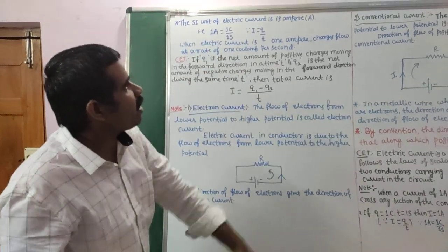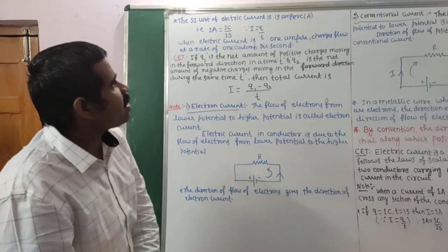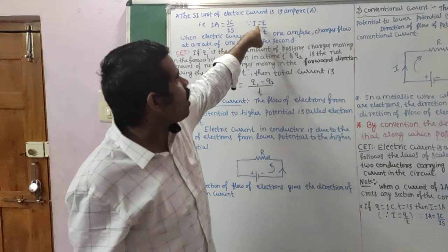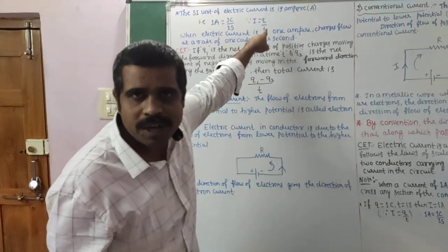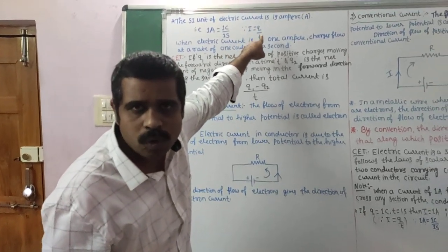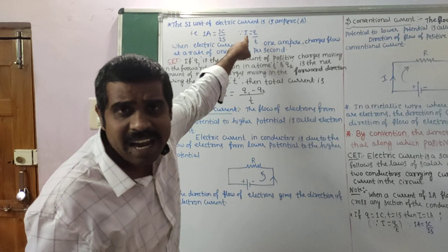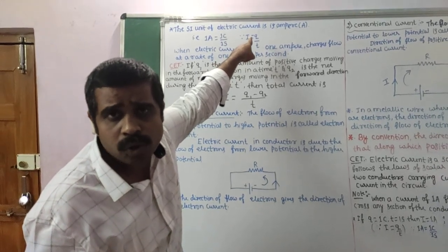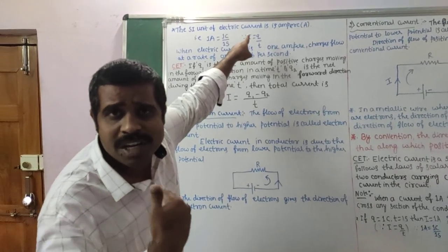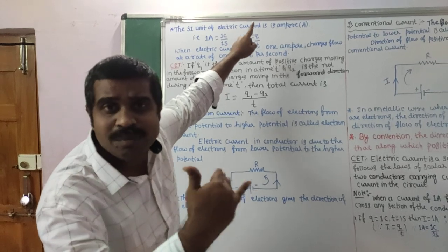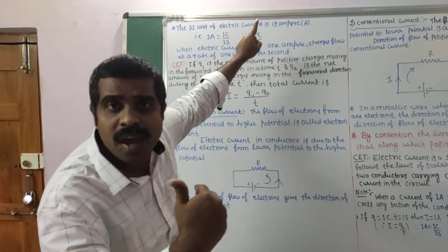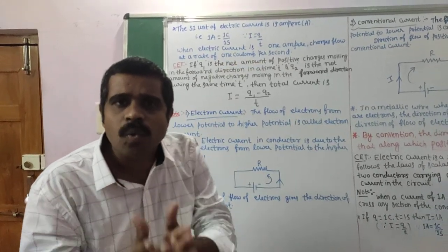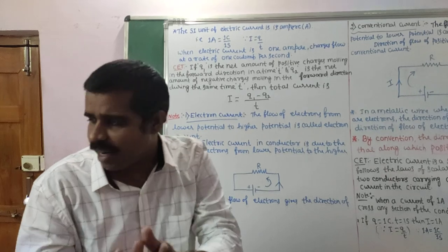The SI unit of electric current is ampere, that is A. 1 ampere is equal to 1 coulomb per second. Using the basic formula I equal to Q by T, if Q equals 1 coulomb and time is 1 second, then I equals 1 ampere. So 1 coulomb of charge must flow through a conductor in 1 second for 1 ampere current to exist.